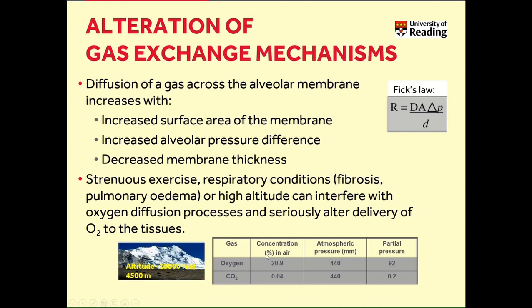For example, consider the partial pressure of oxygen at high altitude — this is reduced because the atmospheric pressure is also lower. Applying the formula used earlier, the partial pressure of oxygen at an altitude of 4,500 meters is roughly 92 mmHg. This means the partial pressure gradient for oxygen is reduced, therefore the diffusion of oxygen will be reduced and the delivery of oxygen to tissue will be impaired.